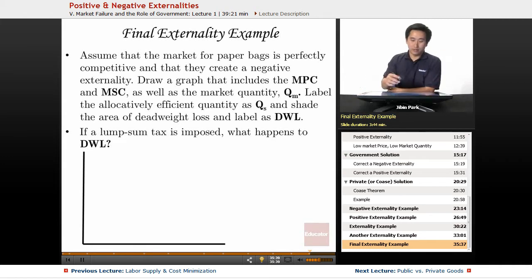And here's the final externality example. Let's assume that the market for paper bags is perfectly competitive and that they create a negative externality. So draw a graph that includes the MPC and MSC.